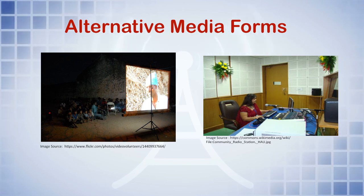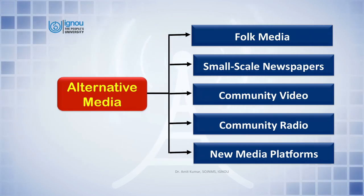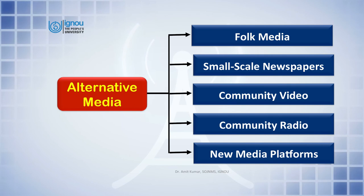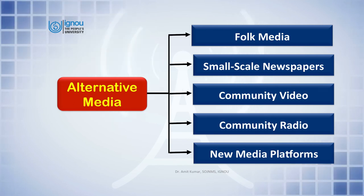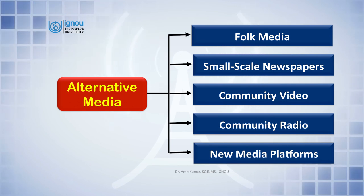Now we will discuss the different forms of alternative media. One important form is folk media. We all know about folk media — it is a traditional media and India has a rich tradition of it. Examples include puppetry shows, street theatre, Nautanki in Uttar Pradesh, and Tamasha in Maharashtra. Through these folk media forms, we can raise the issues of marginalised sections and minorities which are completely ignored by mainstream media.